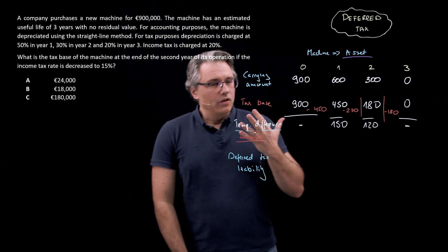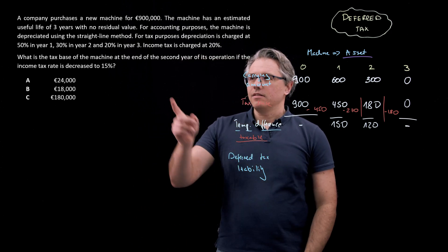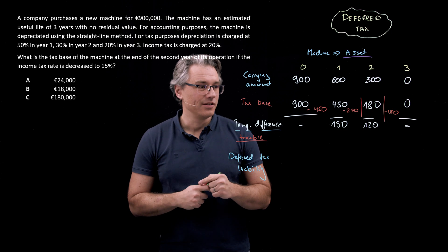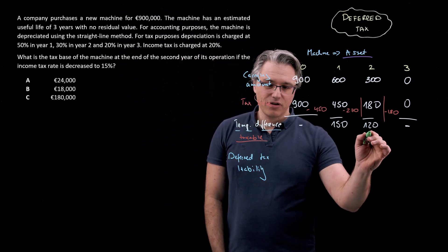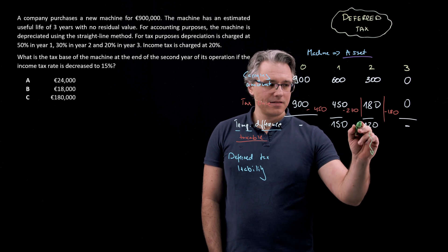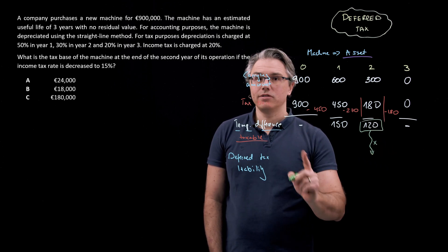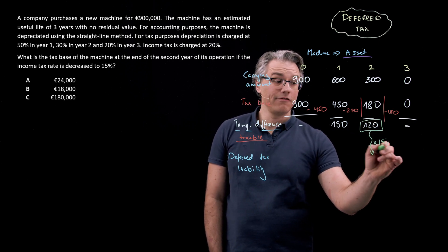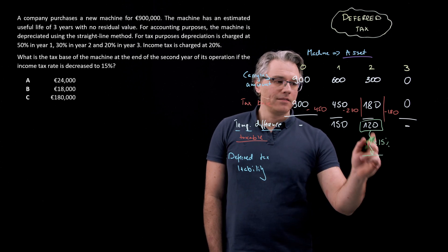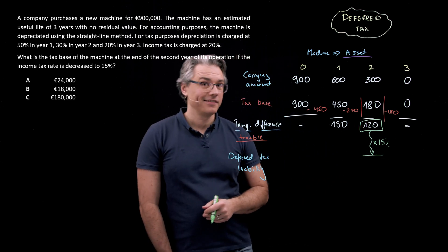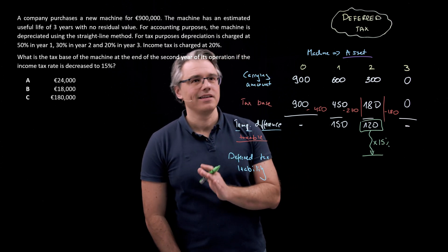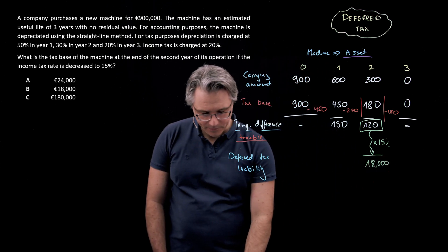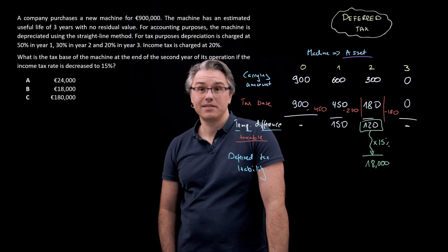The only thing that a change to the prevailing tax rate will do is it will cause us in year two to compute the deferred tax liability as the temporary difference times that changed rate. So instead of the previous 20 percent, it will now be 15 percent, and 15 percent of 120 is no longer 24,000, it is now 18,000. So that would be the value of the deferred tax liability.